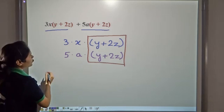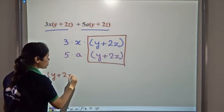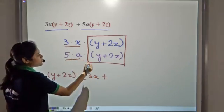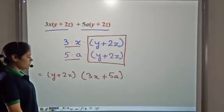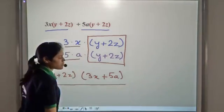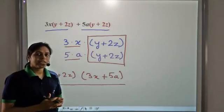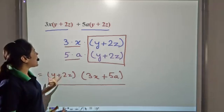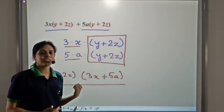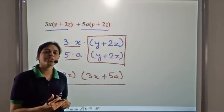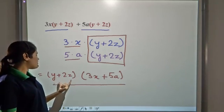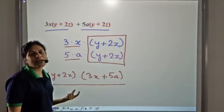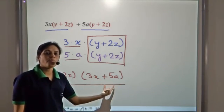We take (y+2z) common and write the remaining parts as 3x plus 5a. This is the factorized form of the expression. Till now, we had seen that we took only single terms or monomials as common factors. But as we have seen in this example, we can also take expressions with more than one term as a common factor. Here we have taken a binomial as a common factor. We can take an expression with any number of terms as a common factor.